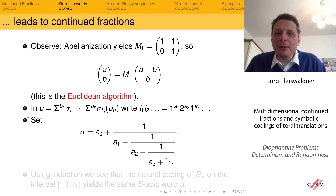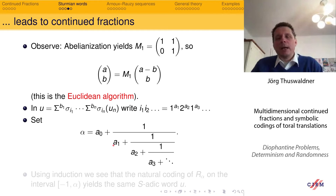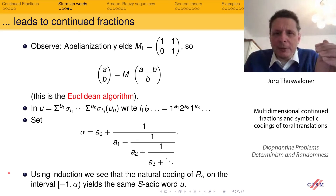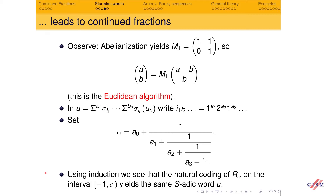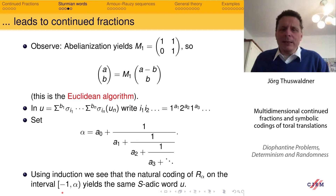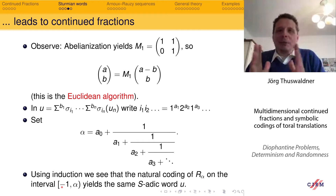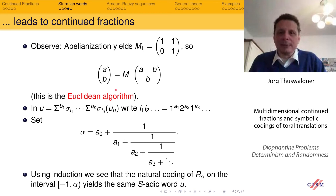Now using induction, you see that the natural coding of the rotation by this α leads to the same S-adic word u. This means your Sturmian sequence can be produced by this rotation. If you induce your rotation cleverly on small intervals, you find the continued fraction algorithm appearing naturally — each time you induce, you do another step in the algorithm and add another substitution.